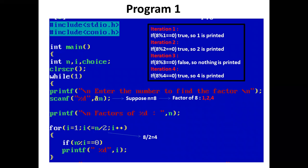And i is incremented by 1. 3 plus 1 is 4. The condition is checked in the for loop: 4 is less than or equal to 4, true. So control again enters the for loop. Now if 8 mod 4 equals 0, true. So we get our third factor. The printf statement prints 4.